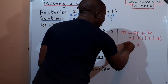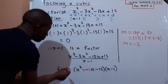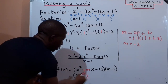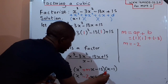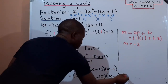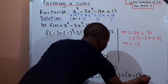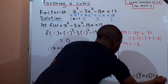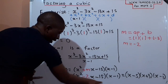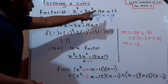Substituting: m = (1)(1) + (-3) = 1 - 3 = -2. So the monkey term is -2, meaning m = -2. Replacing m, the cubic becomes (x² - 2x - 15)(x - 1). This quadratic can be factorized further, giving a final answer of (x - 5)(x + 3)(x - 1), since (x - 5) and (x + 3) are the factors of x² - 2x - 15. That is how you use 'monkeys eat apples plus bananas' to factorize a cubic expression.